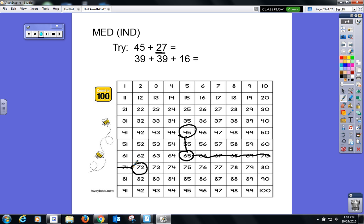72. So 45 plus 27 equals 72. Okay, let's do this one. I want you to do the next one on your own. You're going to add 39 plus 39 plus 16. And when you're finished, we will do it together and make sure we all have the same answer.